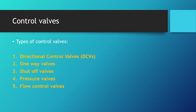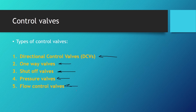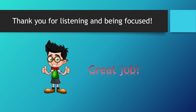When it comes to types of control valves in hydraulic systems, there are five rough groups: directional control valves (DCVs), one-way valves that let fluid flow in just one direction, shutoff valves that cut off fluid flow in the circuit, pressure valves that regulate pressure in the system, and flow control valves used to regulate the flow of work fluid in the circuit. In this section, we will be talking in depth about every type of control valve. Thank you for listening — see you in the next lesson, where we will talk about directional control valves.